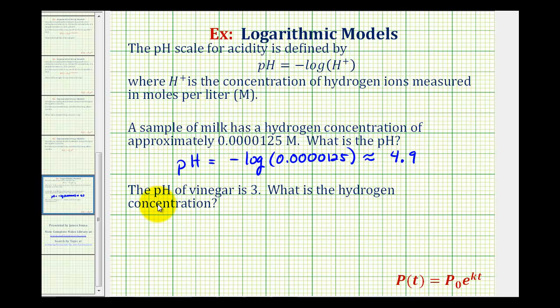Next question: the pH of vinegar is 3. What is the hydrogen ion concentration? Now that we're given the pH, we want to solve the equation for the concentration of hydrogen ions. So we want to solve the equation 3 equals negative common log of the hydrogen ion concentration.